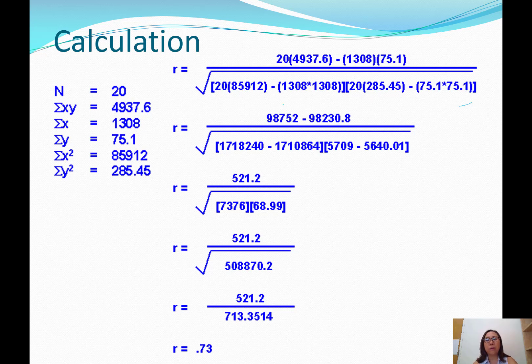At this point, it's a matter of calculating. In the numerator, you have 20 times 4937.6, which becomes 98752, minus, then you have 1308 times 75.1, which gives you 98230.8. So those two numbers, the difference is 521.2, and that remains in the numerator.